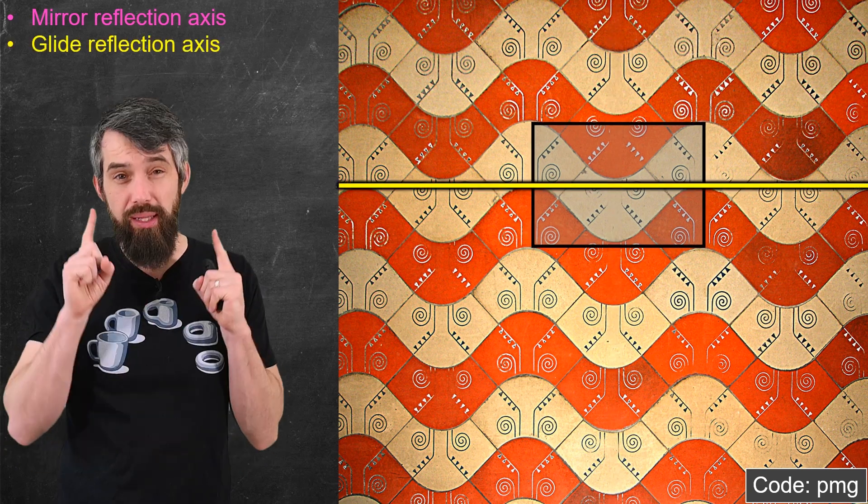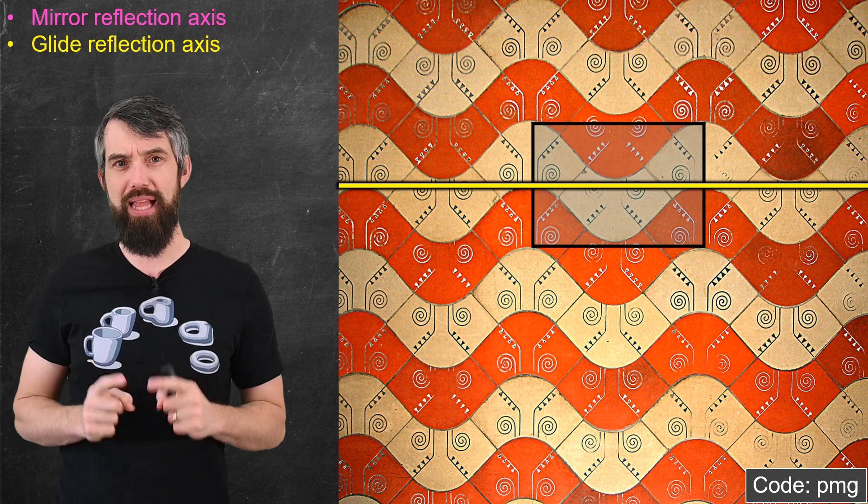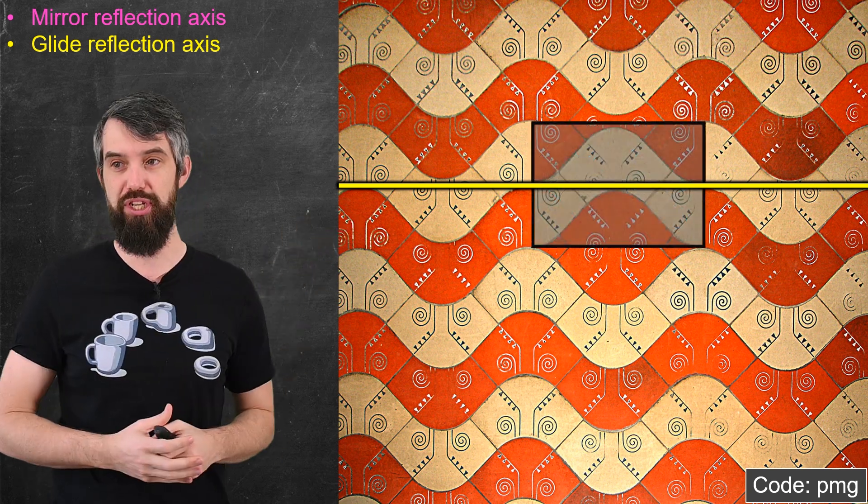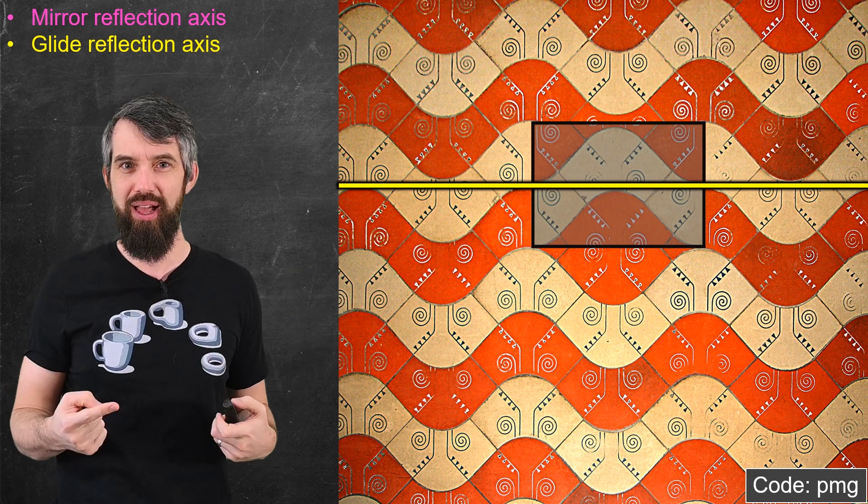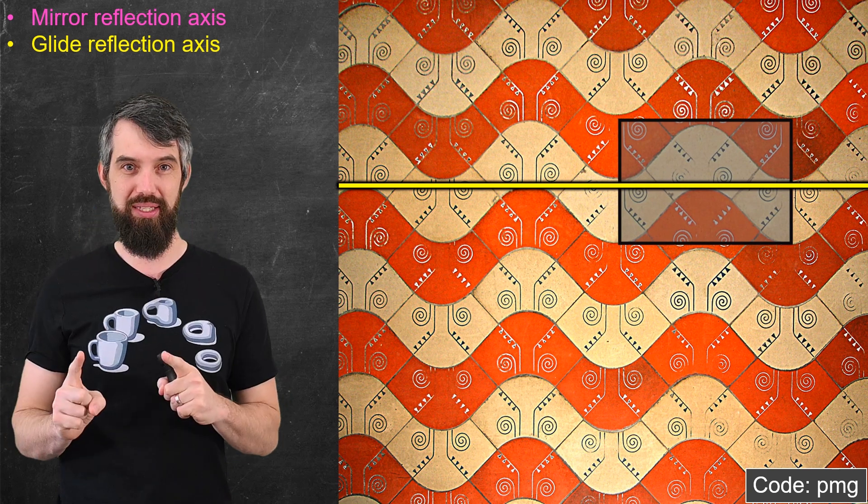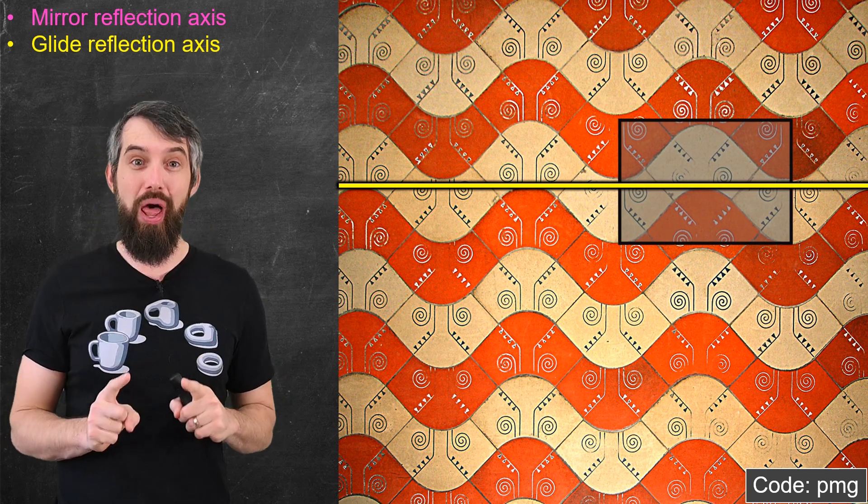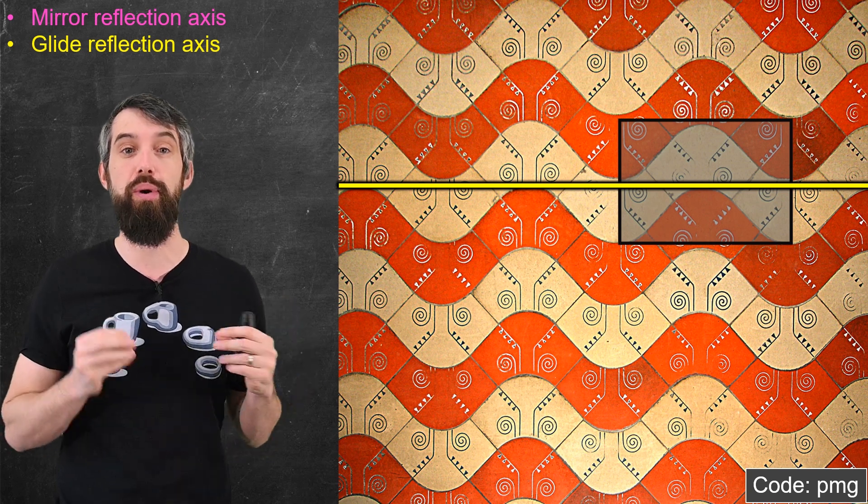Okay, well, what else does it have? It also has a really cool glide reflection axis. Let me take this basic cell that I have, and I'm going to do the mirror image of it. Now you'll notice that the thing inside of the black doesn't align up neatly. But if I glide it off to the side, now it does.